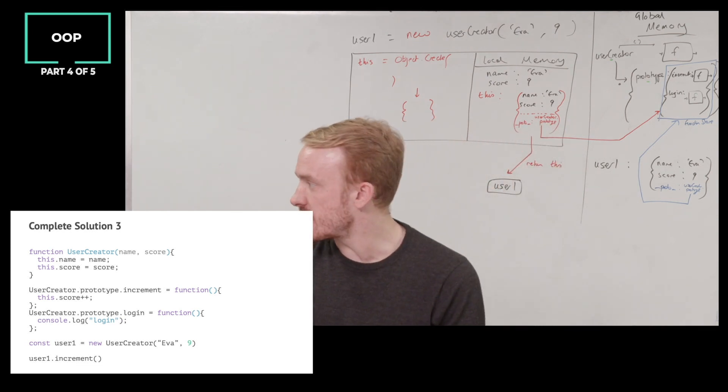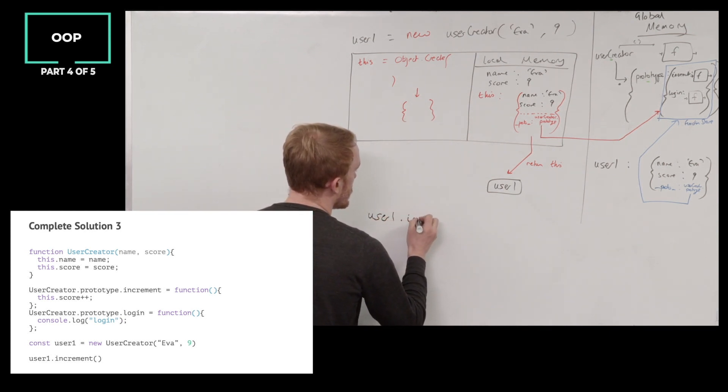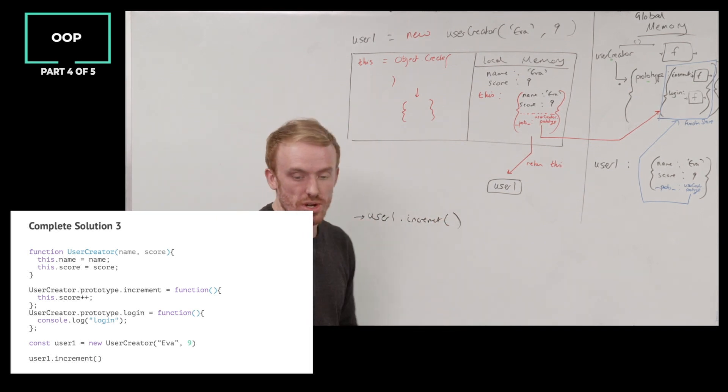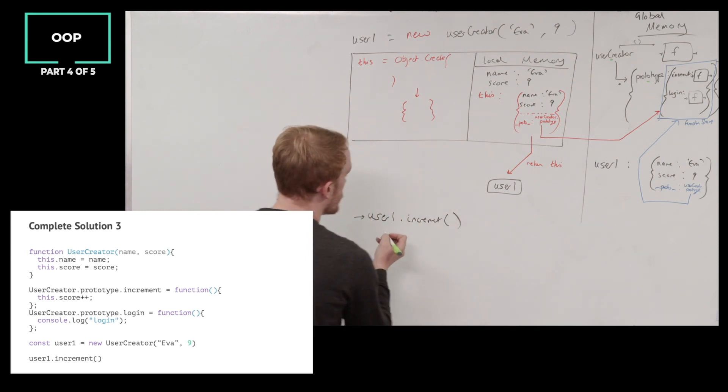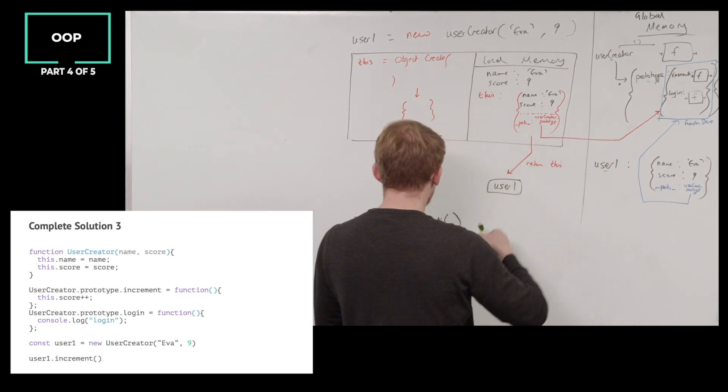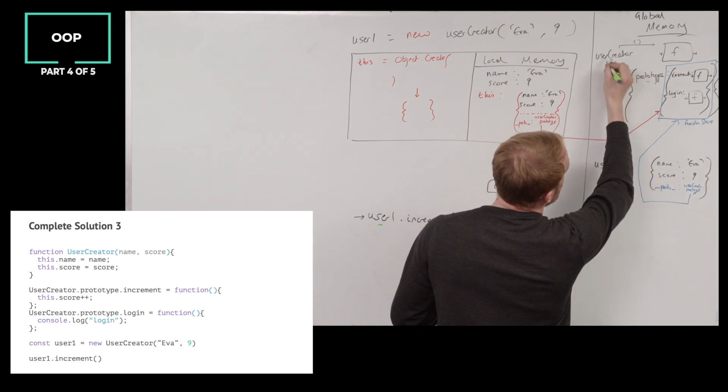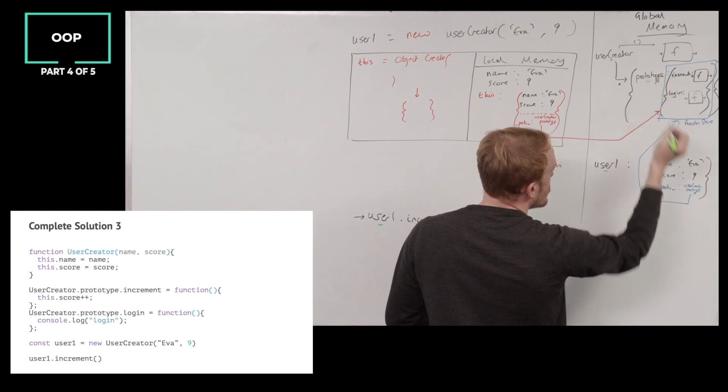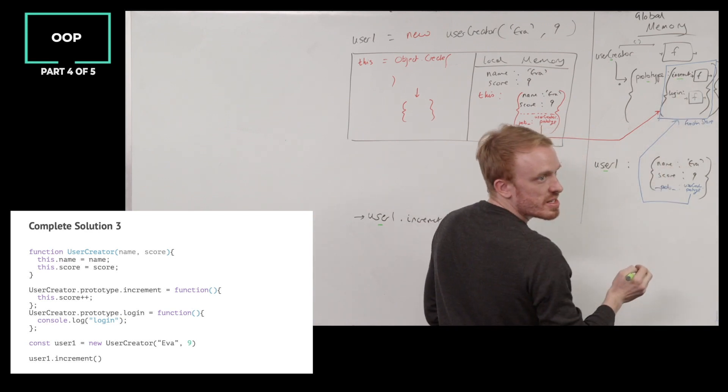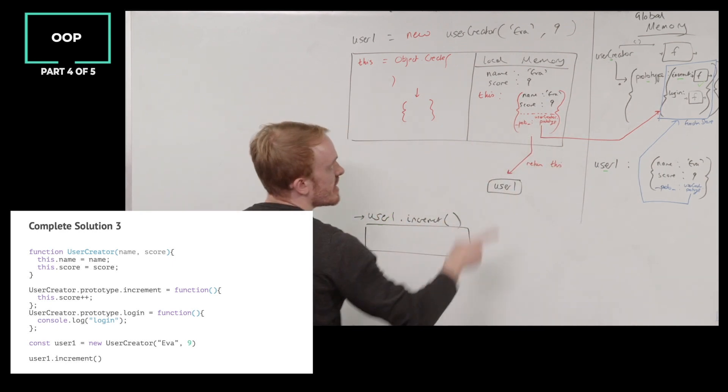So now we ask ourselves, can we do our all important challenge Z of user one dot increment? Is our functionality there available to us on user one? Talk me through it word by word Z. Where do I look for user one? We look in the memory for user one. Do I find it? We do not find the function increment. Oh, I don't find the function increment on user one. Therefore we go to your prototype, which is linked to the user creator. And then we look for the prototype property. Great. And then we look for the object. And then we look for the function. Do we find it? Yes. We do. And we grab its code and we start running an execution context of that code.